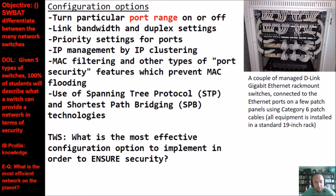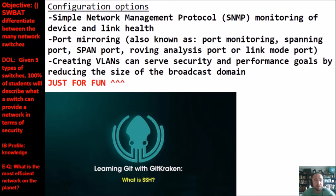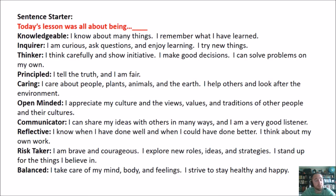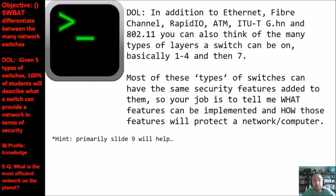What is the most effective configuration option to implement to ensure security? Here are some configuration options you can read through. The DOL is: given Ethernet, Fiber Channel, and all the other network types discussed, plus the many layers a switch can be on — Layers 1 through 4 and 7 — most types of switches can have the same security features added. Your job is to tell me what features can be implemented and how those features will protect a network. In other words, what can a switch provide in terms of security?